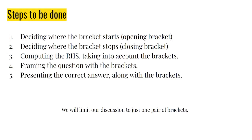It turns out that there are really 5 steps that need to be done to incorporate brackets. We are going to go through them slowly. The steps are: deciding where does the bracket start — the opening brackets; deciding where does the bracket stop — the closing brackets; computing the right-hand side taking into account the brackets, since that changes the priority; framing the question also with the brackets; and finally, presenting the correct answer along with the brackets. These are very logically broken down so that we can do this in code. For this discussion, I'm just going to limit to one pair of brackets.